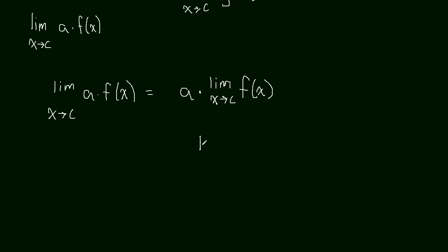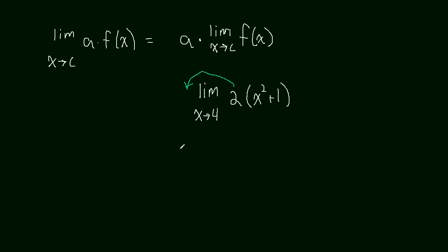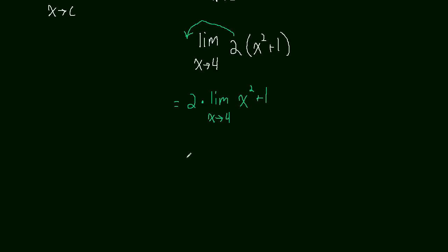Let's say we had the limit as X approaches four of two times X squared plus one. We can take this two and pull it out. So this is equal to two times the limit as X approaches four of X squared plus one. And now we can use our substitution property. And we're just going to get two times four squared plus one. This is two times that whole thing. And that's just going to be 16 plus one is 17 times two is 34. So this limit, this total limit was equal to 34.